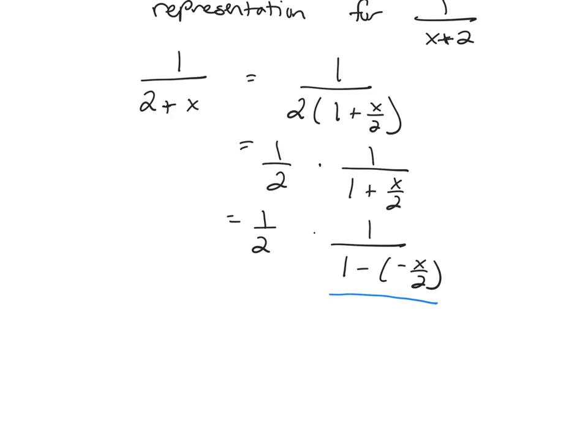So I have 1 half. And then you're going to replace an x to the n. I'm going to replace it with negative x over 2 to the n.